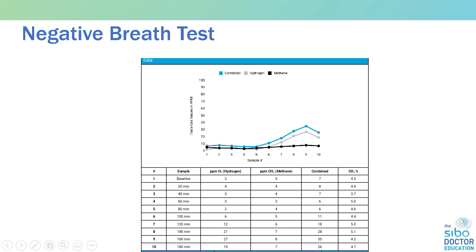For methane, we also see single digits here, and anything below 10 with the absence of constipation is considered normal. We're concentrating on differentiating between normal and abnormal test results when it comes to flatlining and possibly hydrogen sulfide. For all intents and purposes, this is a totally negative breath test result. If you're suspecting your patient has SIBO and you get a result like this, you may want to follow up with a different type of test sugar like glucose or fructose.